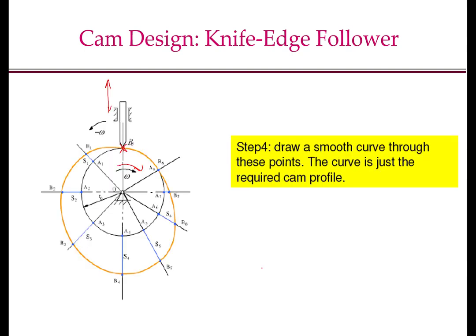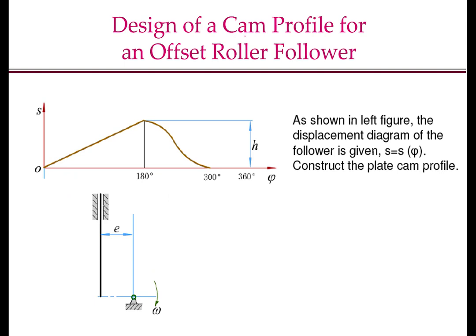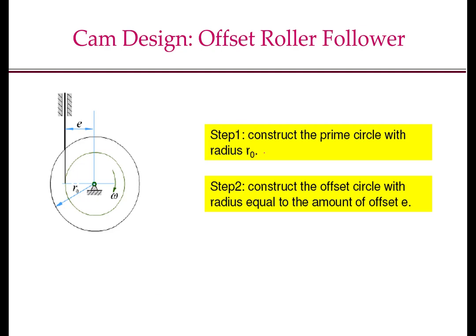The procedure used for designing the cam profile for a knife edge follower can also be used for a roller follower, with one additional step. Now let us look at the problem of design of cam profile for an offset roller follower. We start with the displacement diagram, where phi is the angle of camshaft rotation and E is the offset or eccentricity, and the cam is moving in the clockwise direction. The first step is to choose the prime circle radius R0 and construct the prime circle. The second step is to construct the offset circle with radius equal to the offset E.